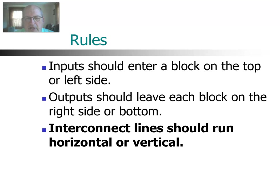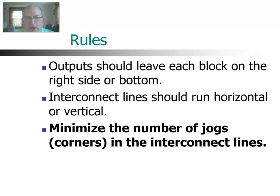Your interconnect lines that represent the signal flow should always run horizontal or vertical. In other words, you do not want any diagonal lines. You also want to minimize the number of jogs in the interconnect lines. In other words, your corners where you turn direction. You don't want to do that too often. The idea here is that you want to make the signal flow easy to follow with your eyes. If you have a lot of jogs, it makes it more difficult to follow that signal flow with your eyes.